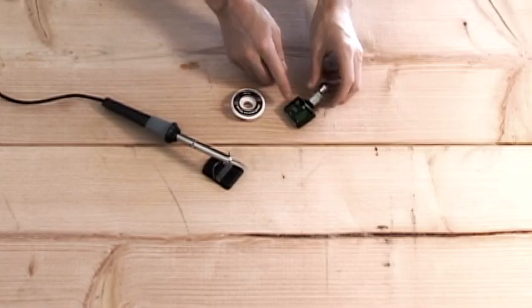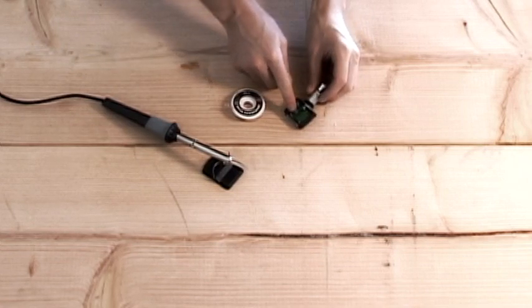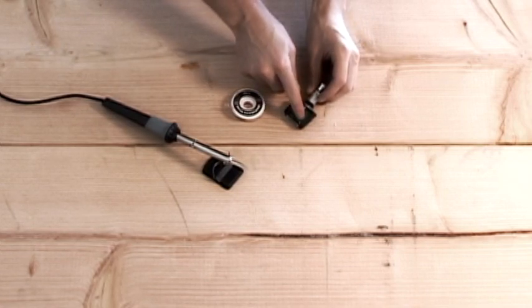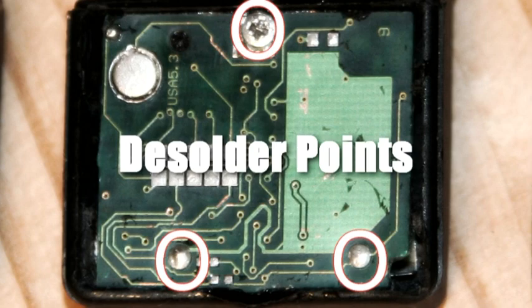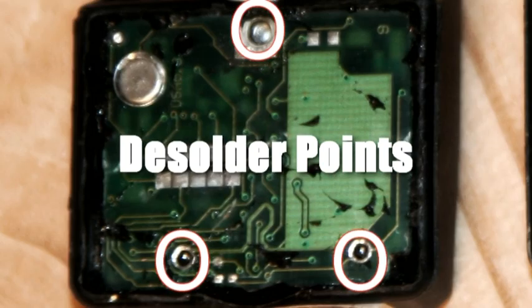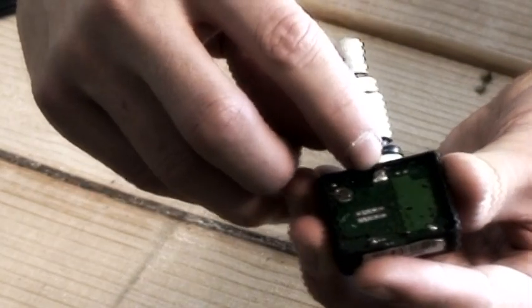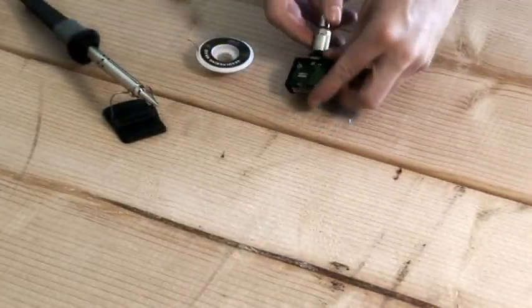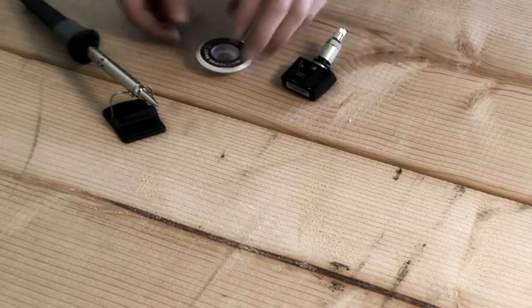Now the trick is to desolder the battery leads here and here. We're going to desolder from the circuit board and desolder this mounting screw from the circuit board right there. Then what we can do is we can pop the circuit board out.